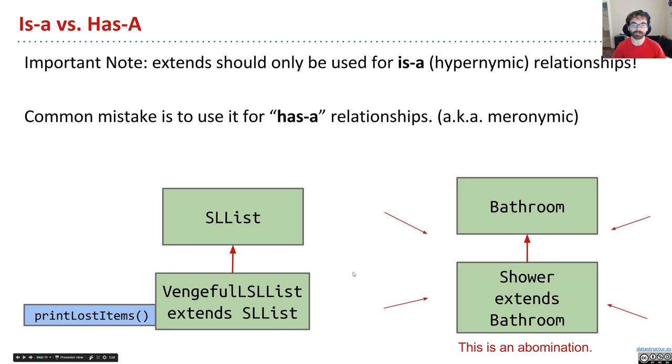The last thing to say about extends before we move on to a slightly trickier topic here is that it should be only used for is-a relationships. So that is, something is a hypernym of something else. So S-list is a hypernym of vengeful S-list. That's great.